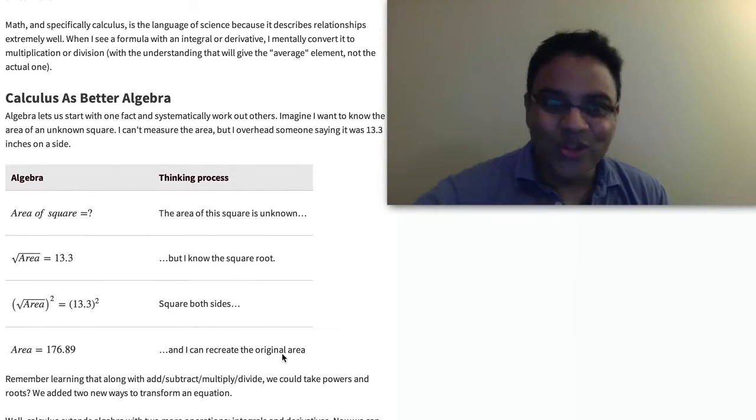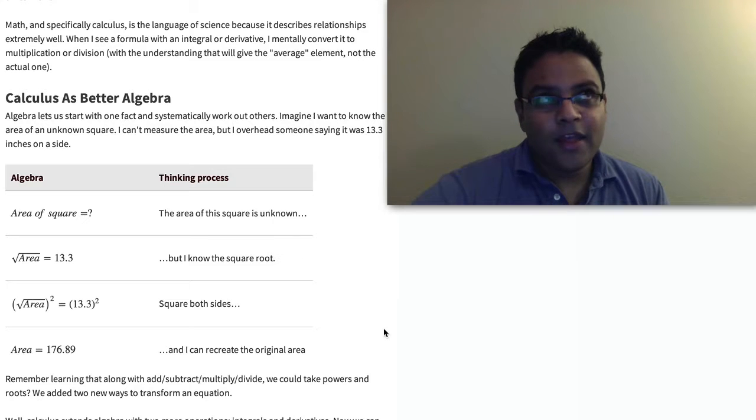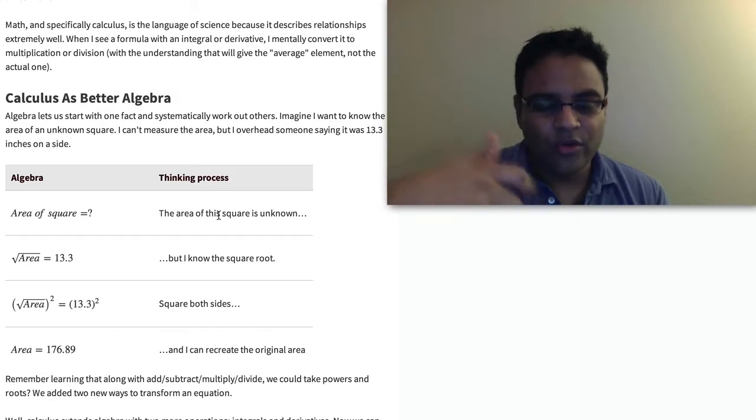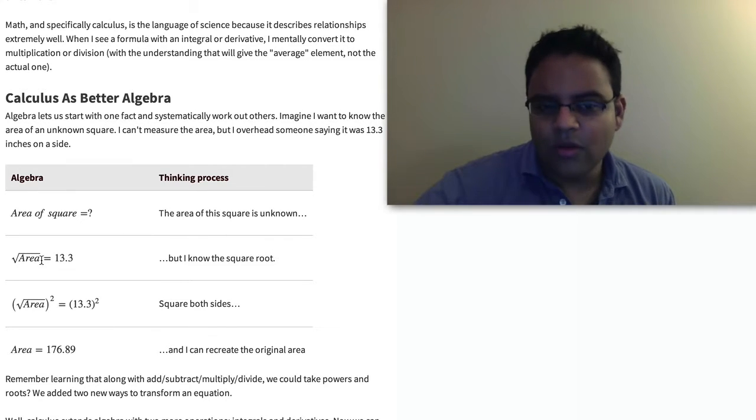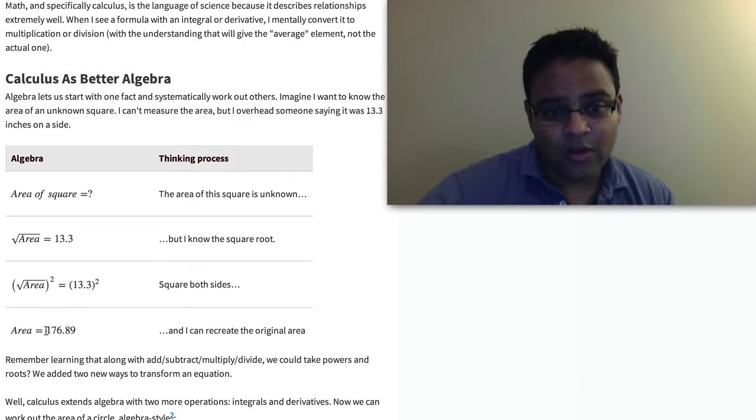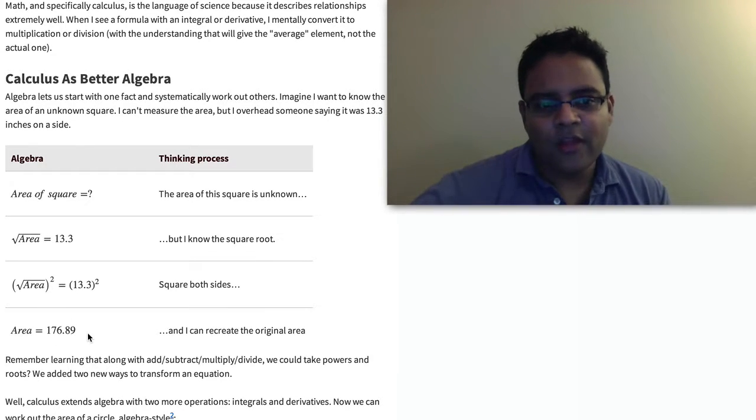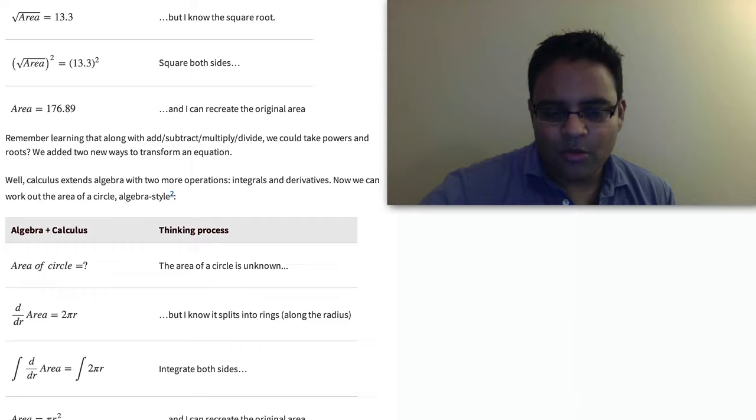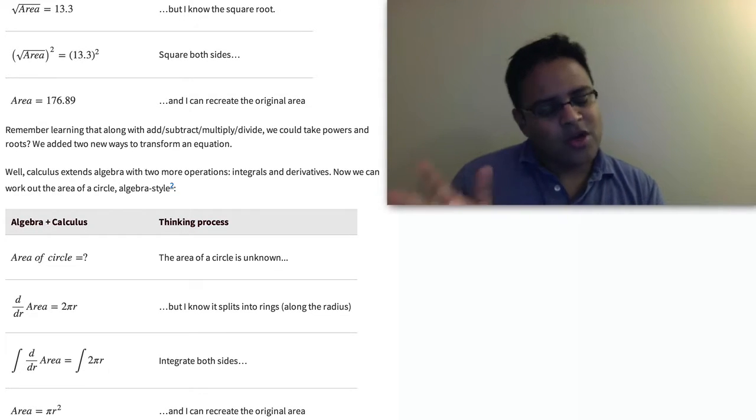With algebra, we're used to deducing facts. We start with one fact and work our way around to get other ones. One example might be, I have a square. I don't know the area, but I know that one side of the square, or basically the square root is, let's say, 13.3. How can I find the area of the original square? If we know that the square root is 13.3, then we can square both sides, and that'll cancel this. We take the square of it and get the answer. The area is 176.89. We don't know the area, but we know a fact about it, and we can work from that fact back to the answer.